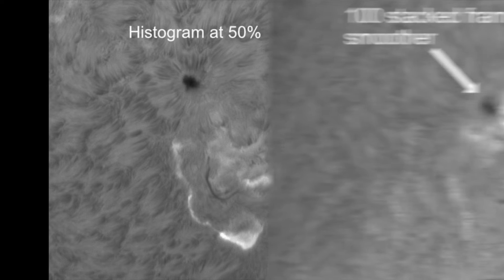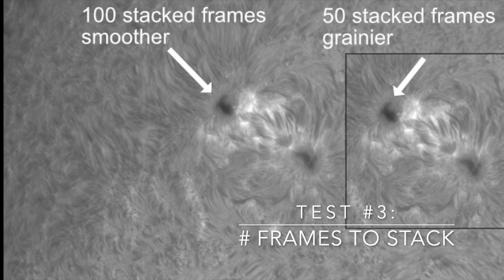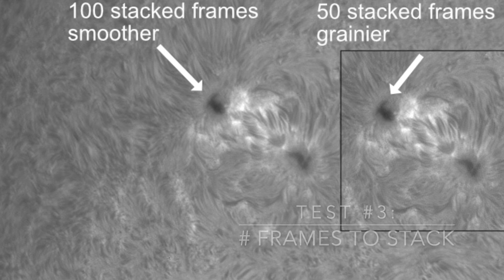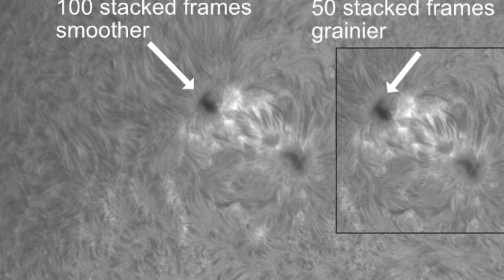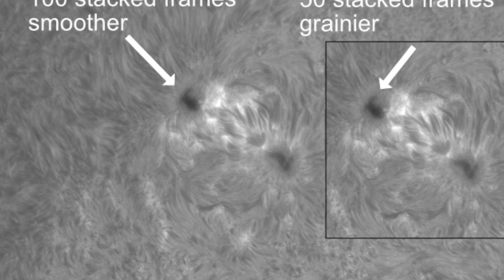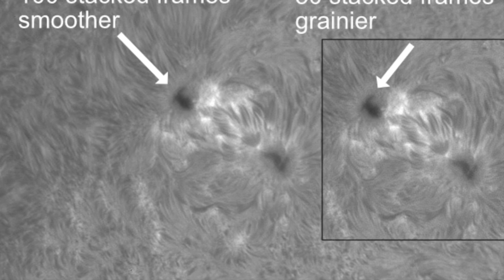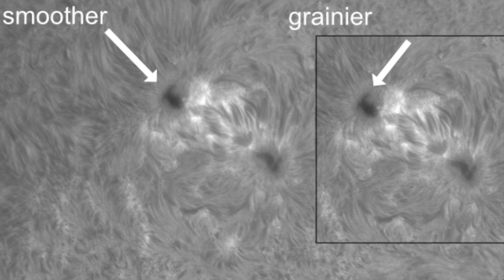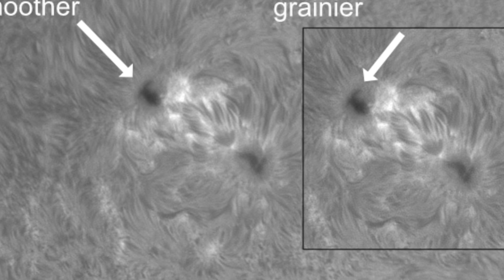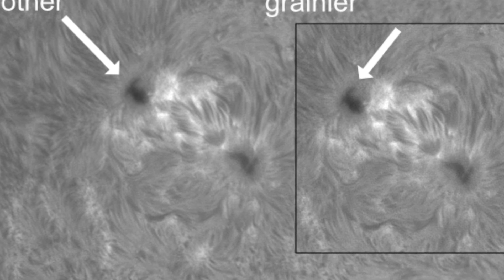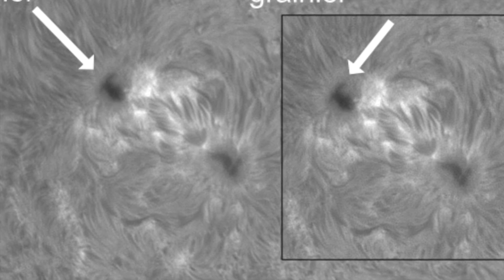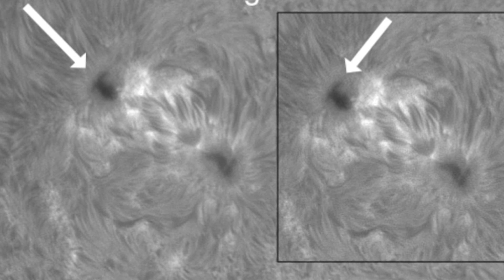Finally, I wanted to look at how many frames to stack. The trade-off is noise in fewer stacked images versus image clarity in more stacked images. I captured 1,000 frames and then stacked 50, 75, 100, and 200 at various magnifications on the sun over several sessions. What I determined was the optimal amount seemed to be 80 to 100 frames. Comparing the same SER file stacked with 50 frames versus 100 frames, there is definitely more noise at high magnification in the 50-frame image, leading me to conclude that 50 frames are still too noisy. It looked like 80 to 100 frames tended to give the best results.